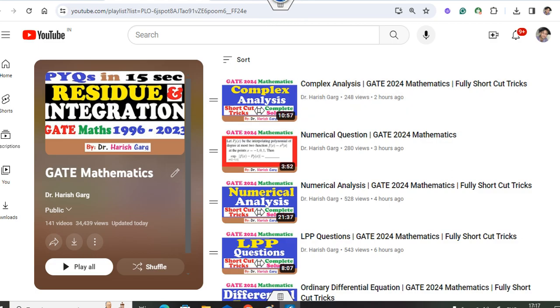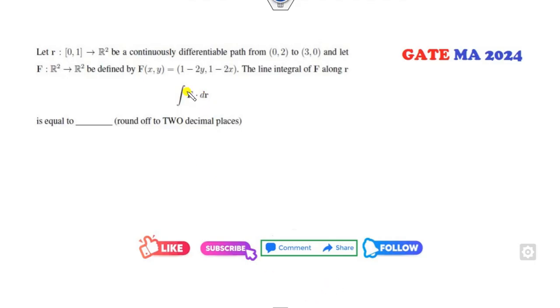Now what comes to mind when you talk about F dot dr? You always think about Green's theorem, but you can see this region is not closed. If you look at that, this is not a closed curve.